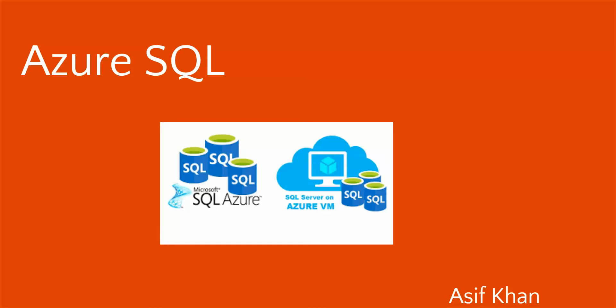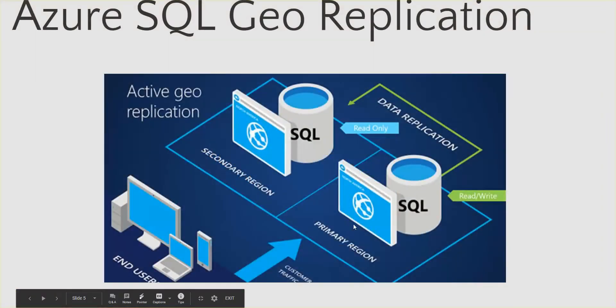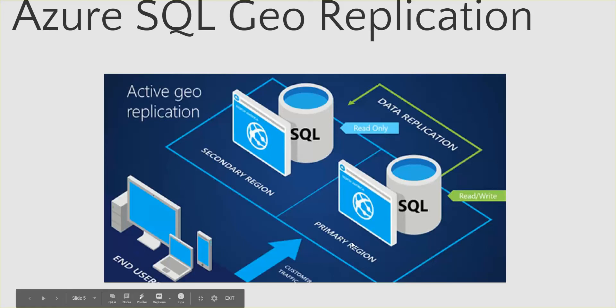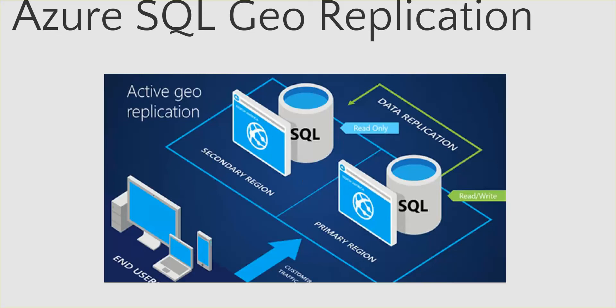In this video, I want to take the next step and explain how you can utilize this secondary database. When we provision this GeoReplicated secondary database, we have the primary database which is always active and directly connected to our applications. The secondary database is available and getting replicated in real time, but it is just sitting there doing nothing apart from the replication process. If you have been using SQL Replication historically, this was the same scenario there as well.